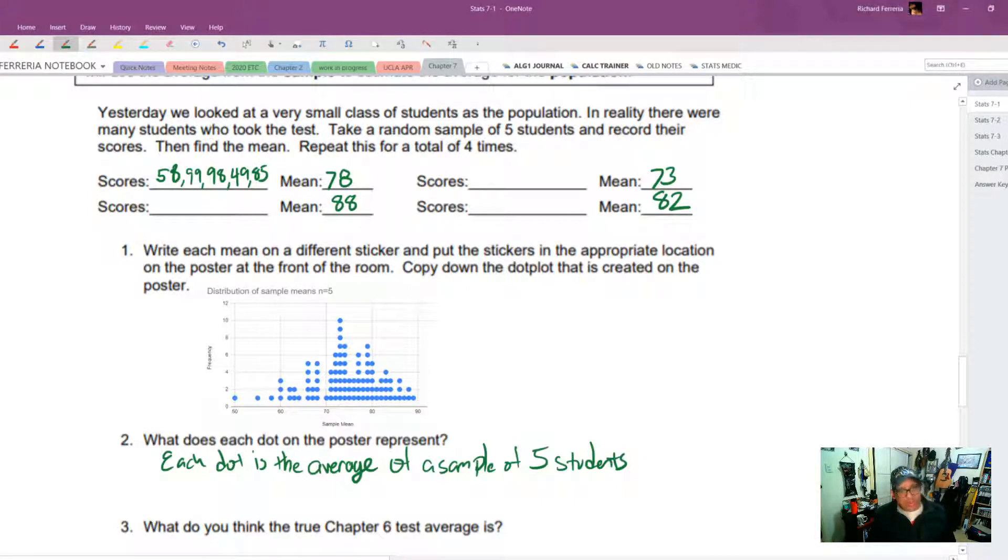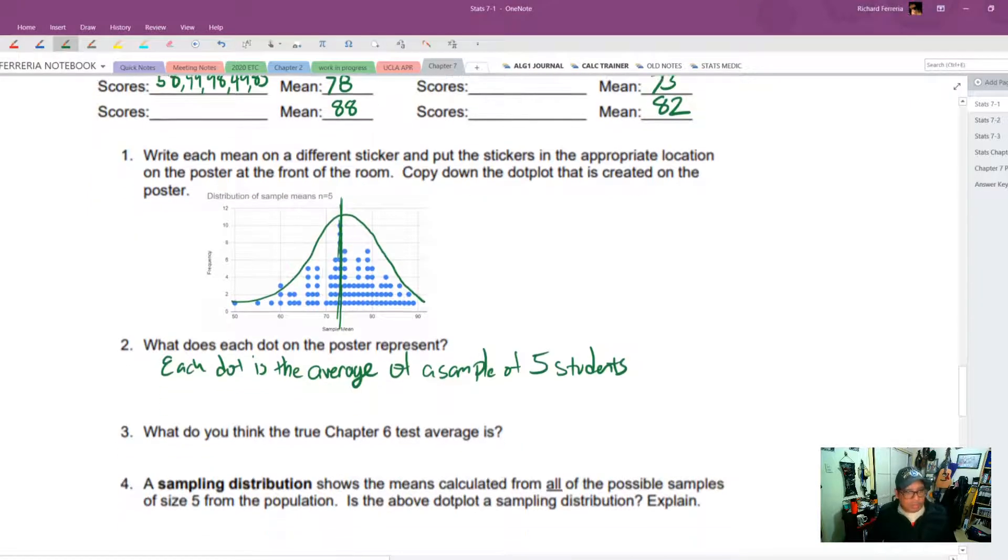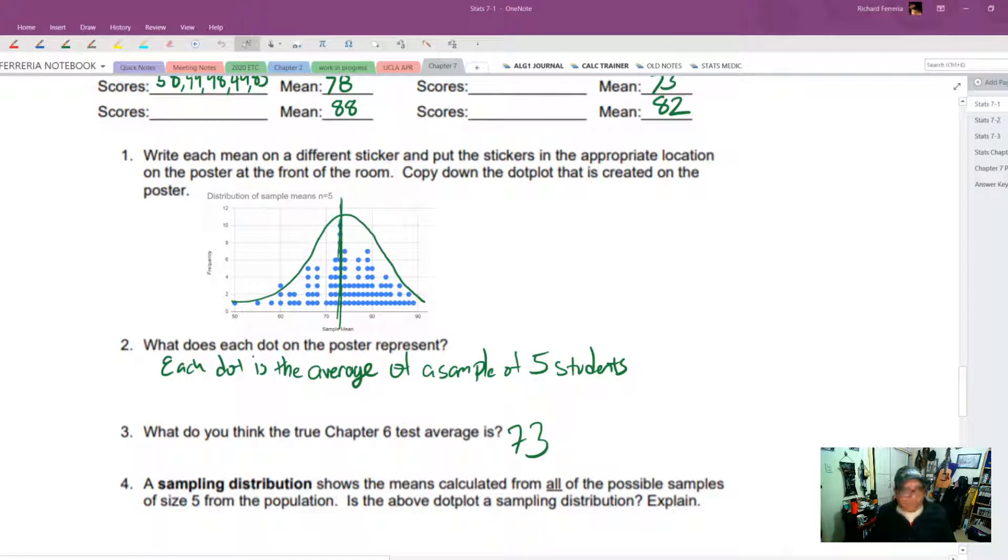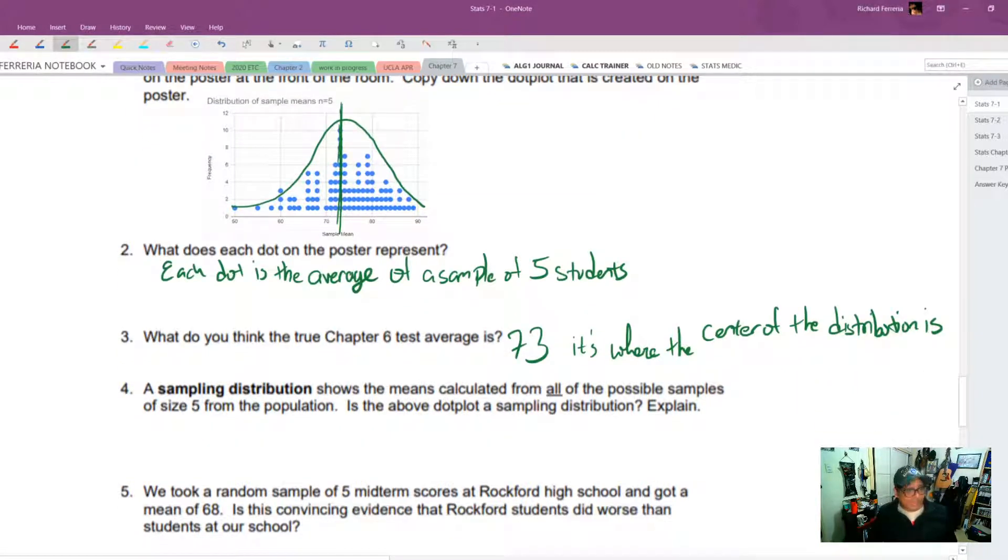What do we think the true chapter six test average was? And looking at this dot plot, I see a mound shape distribution. So it seems to me that the average test score should be somewhere at the peak of this mound. And if I'm not mistaken, that's 73. So based on the evidence that we see here, based on all of the samples that we've taken, we think the true chapter six average is 73 because that's where the peak is, or maybe better put, where the center of the distribution is.